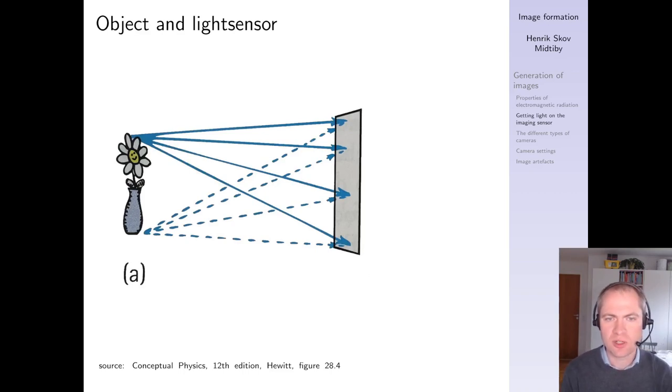Now we will take a look at how we actually generate an image on the photosensitive device, our image sensor. One way of doing it is simply just to expose the sensor to the surroundings, and then light from one point in the object will go in many different directions and end up in multiple locations on the sensitive device. So this doesn't generate a proper image, it will just be a general measure of how much light is present in the scene.